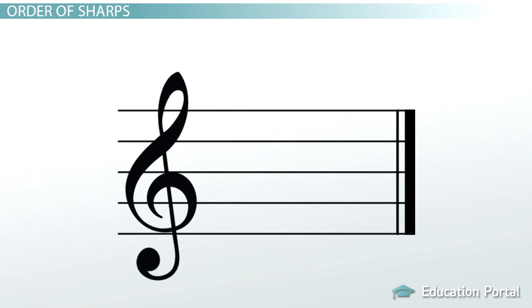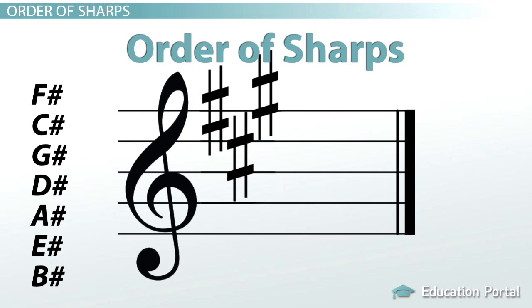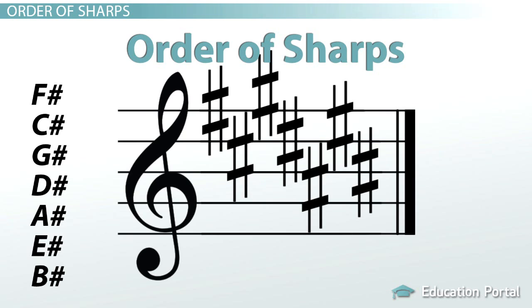Let's start with the sharps. The sharps written in a key signature are always written in a particular order, called the order of sharps. The order of sharps is F sharp, C sharp, G sharp, D sharp, A sharp, E sharp, and B sharp.